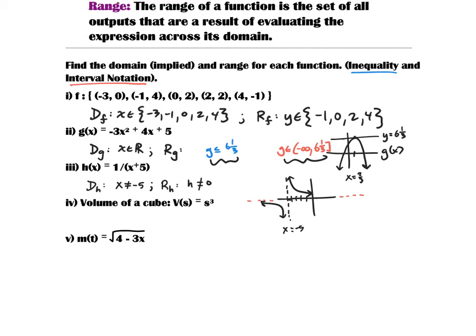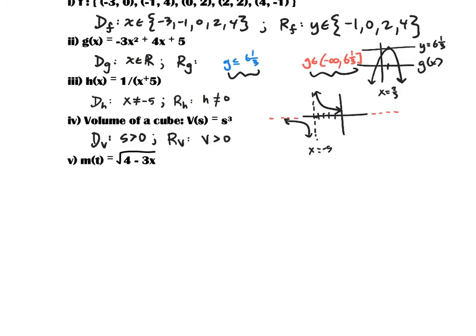Looking at the volume of a cube: the domain of V is that s must be greater than 0 — a cube's side length has to be greater than zero to exist, and it can be any value above that. The range for V is that V is also greater than 0. Not greater than or equal — it cannot be zero.